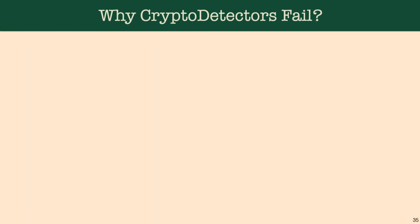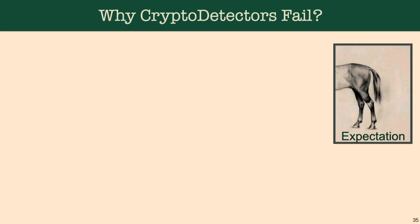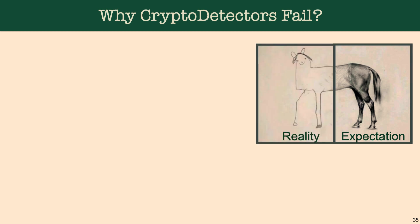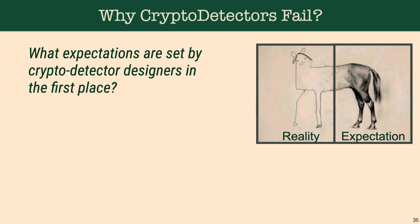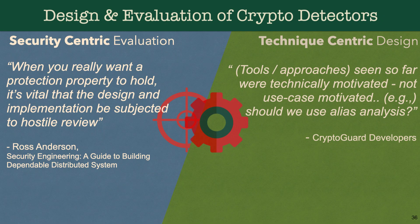Which brings us back to the original question: why do cryptodetectors fail? Because we have all these expectations about cryptodetectors, but in reality some trivial cases are evading them. We tried to understand what's going on and what expectations are set by cryptodetectors in the first place. What we noticed is that we are applying a security-centric evaluation — subjecting these cryptodetectors to a hostile review because we expect them to be good when it comes to security.